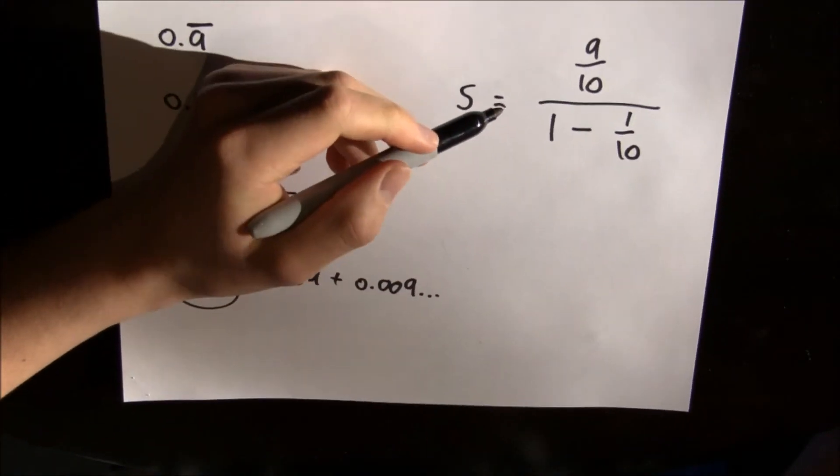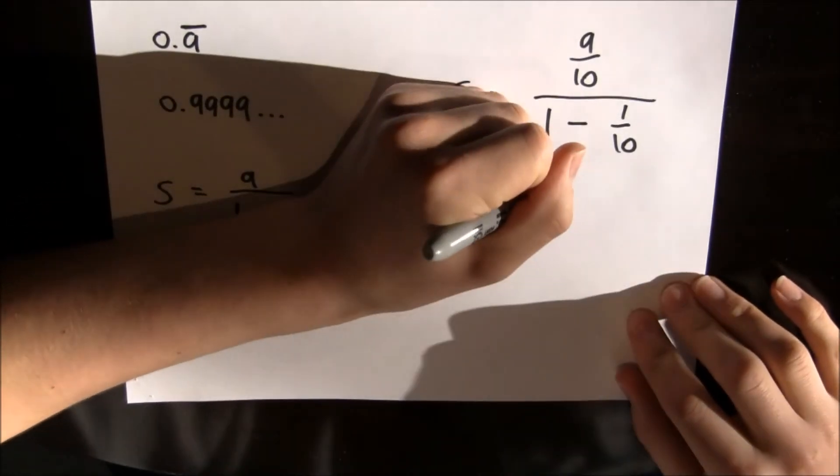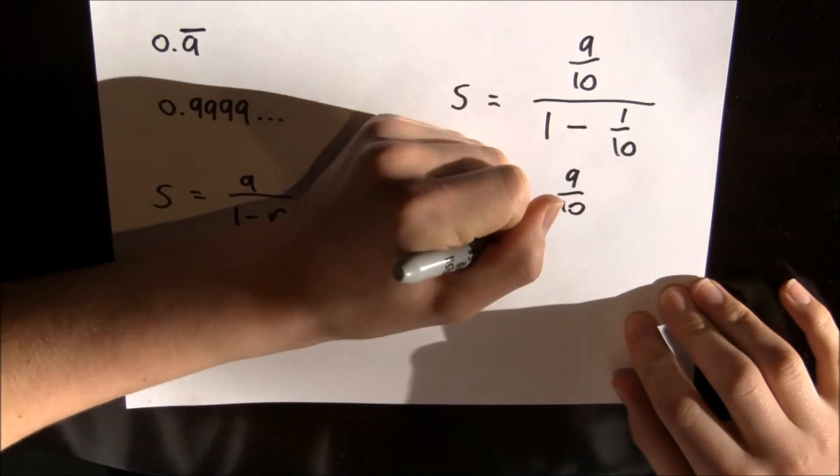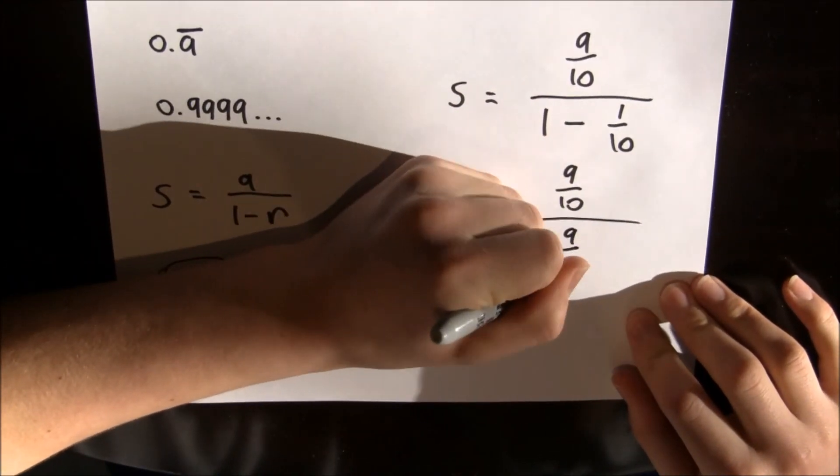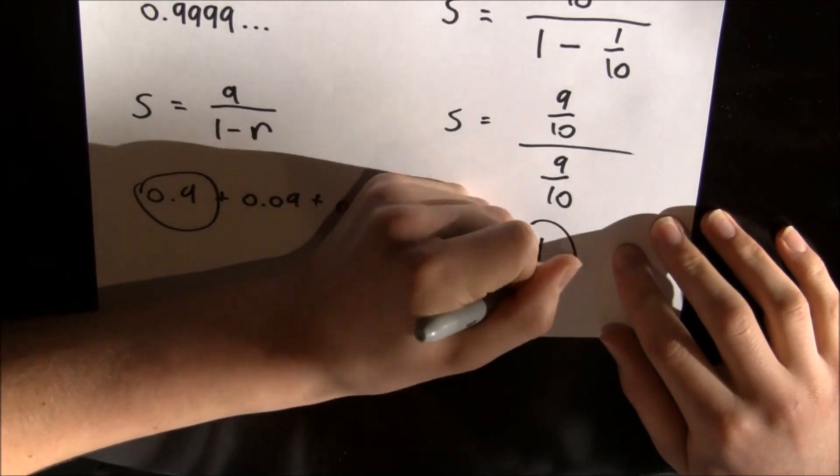So what do we have here? Well, we've got 9 tenths divided by 9 tenths, and anything divided by itself equals 1.